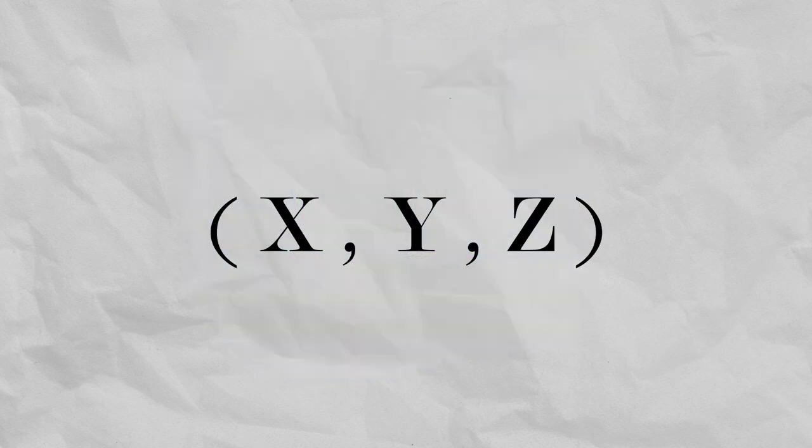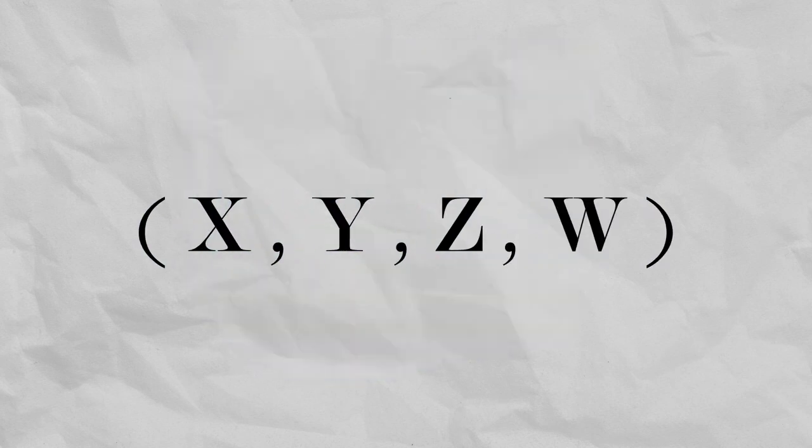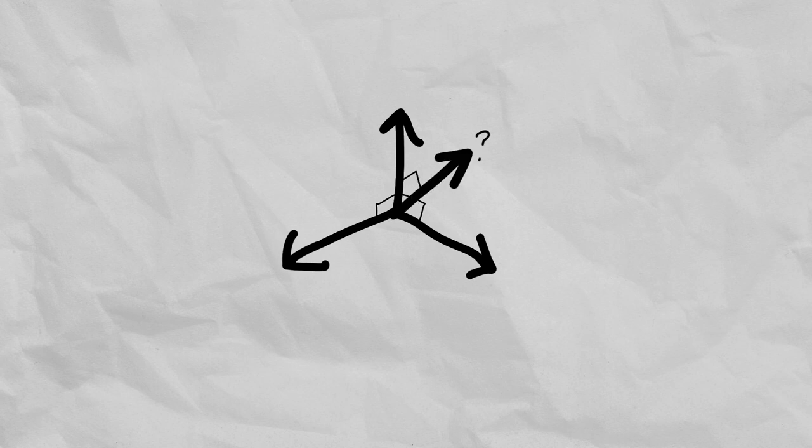The fourth spatial dimension is scary, but it's really just another coordinate tacked onto the three dimensions of X, Y, and Z. We use W for the fourth dimension.